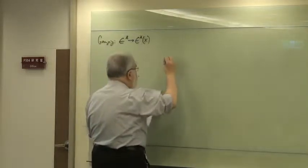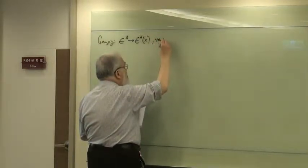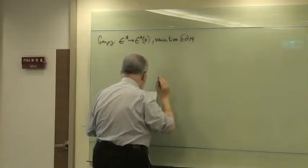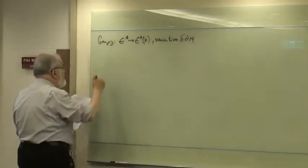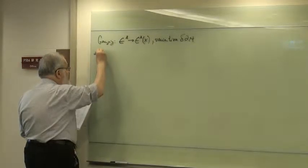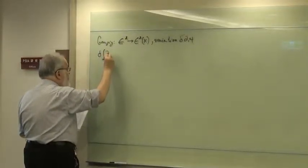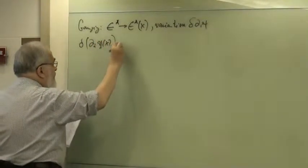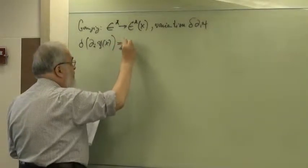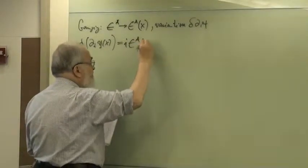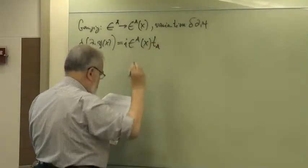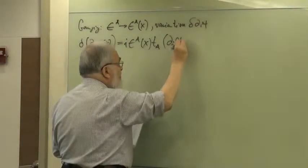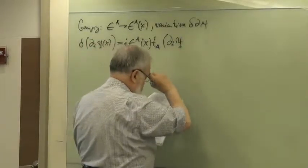And the variation—you know that is always the variation of the derivative of the wave function which is passing in the gauge procedure, which destroys the invariance—the variation of the gradient of the vector field ψ of x is equal to iε εa(x) ta, the generators, times the parenthesis ∂ψ of xi of x.